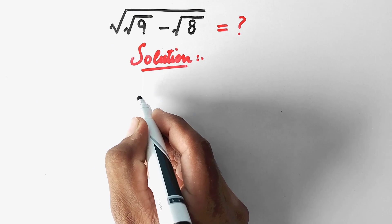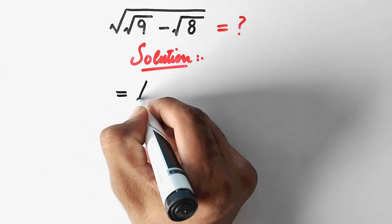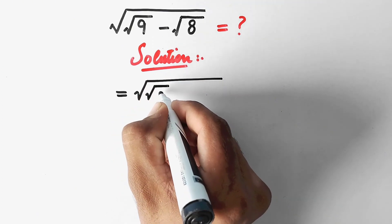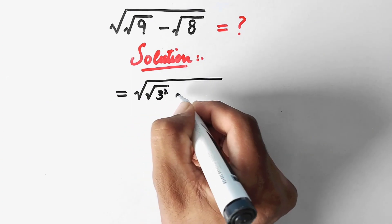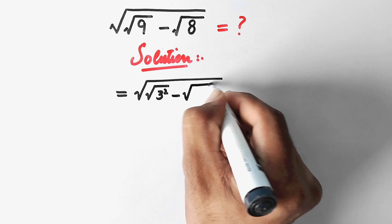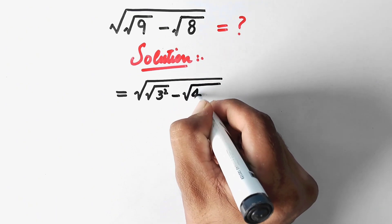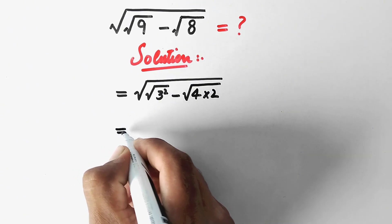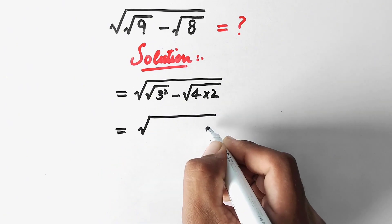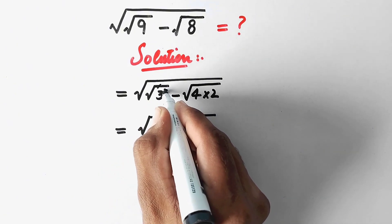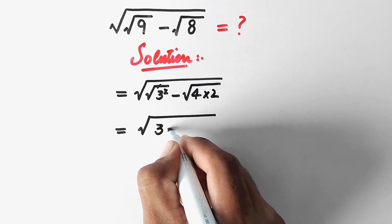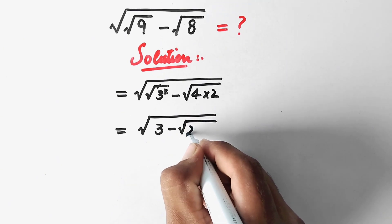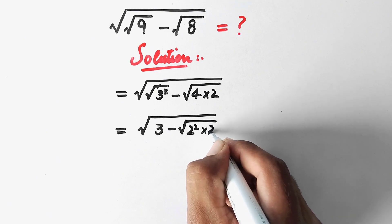In the first step, we can write square root 9 as 3 squared, and square root 8 is the same as 4 multiplied by 2. Now this implies that the square root will cancel out the square, and here we have 3 minus square root of 4 — which is 2 squared — multiplied by 2.